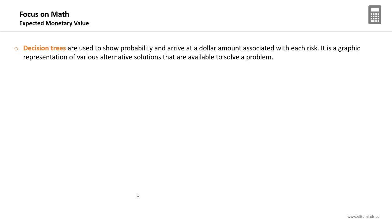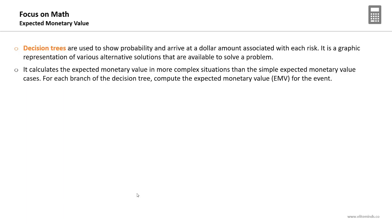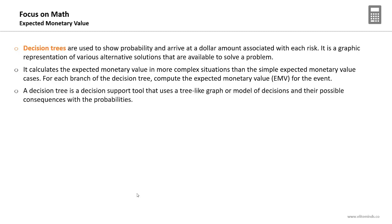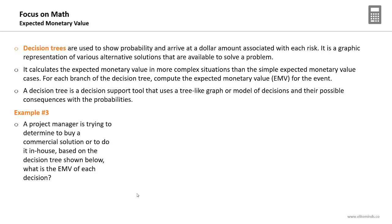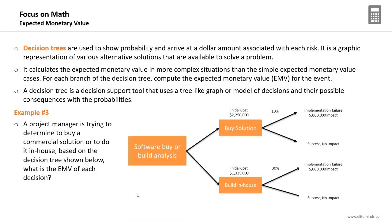One of the popular applications of EMV is decision trees. They are used to show the probability and arrive at a dollar amount associated with each risk. A decision tree is a graphic representation of various alternative solutions available to solve a problem. It calculates EMV in more complex situations than simple cases — it is a group of branches, and for each branch you compute the EMV. It is a decision support tool using a tree-like graph of decisions and their possible consequences with probabilities.